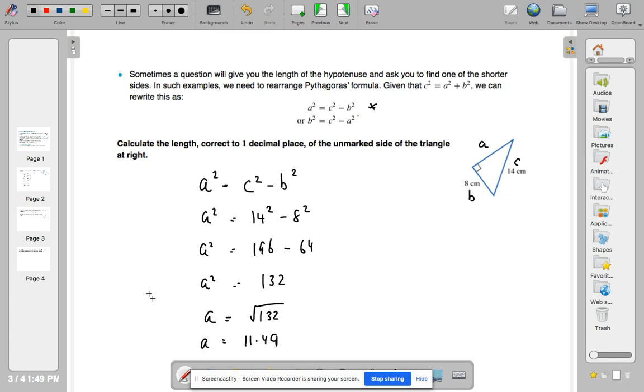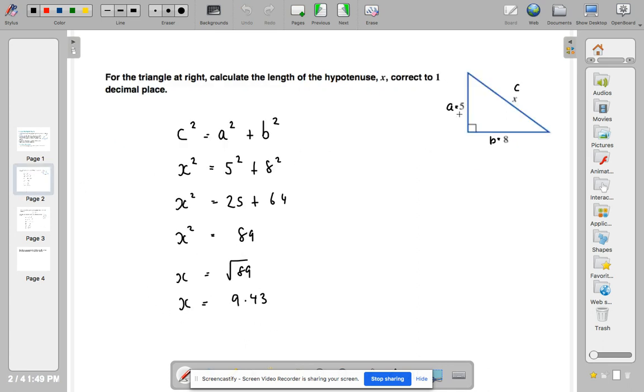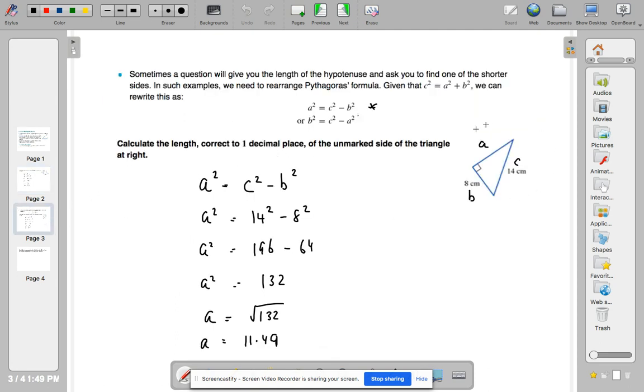There we go. So there's two examples. Here we're finding the hypotenuse. C squared equals A squared plus B squared. Here we're finding one of the shorter sides. So it's the hypotenuse squared minus the other side squared.